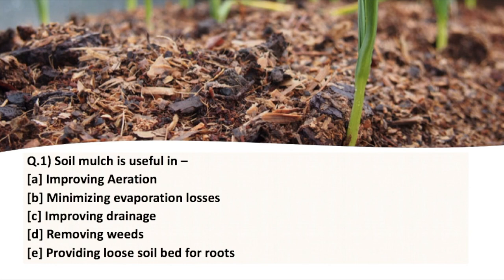The first option is improving aeration. This cannot be the agenda of soil mulching because we are covering the soil — covering the soil does not mean we are providing aeration to it. The next option is minimizing evaporation losses. This can be the answer. When we cover the soil, less of the soil area is exposed to air or sun, therefore there is minimizing of evaporation.